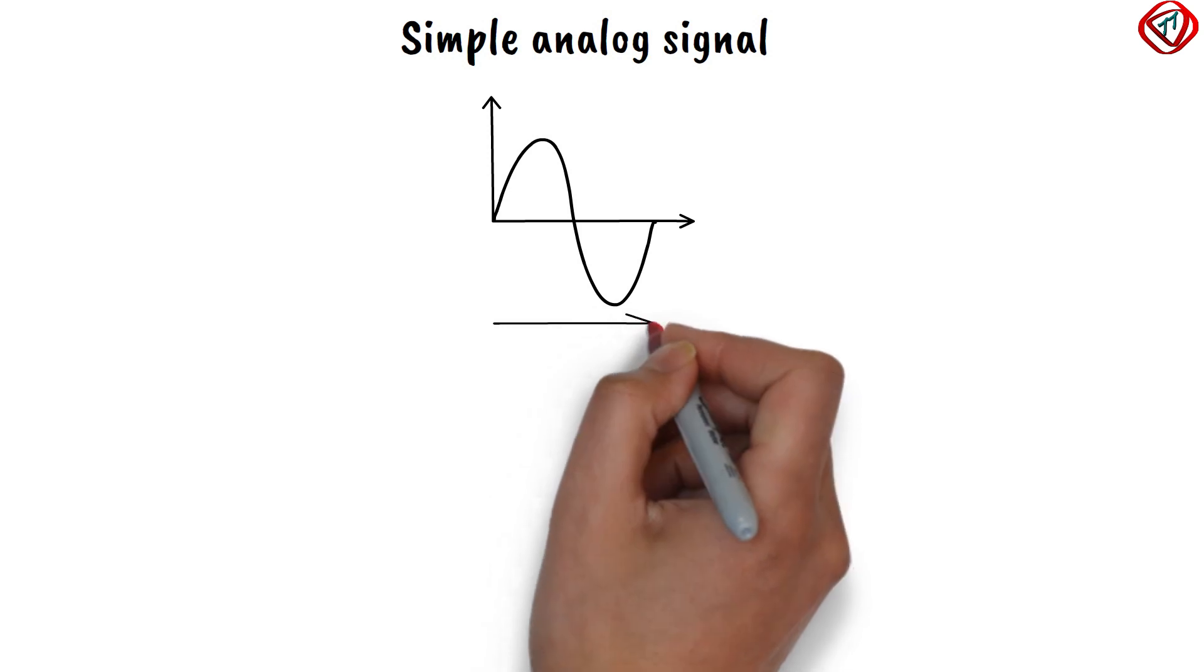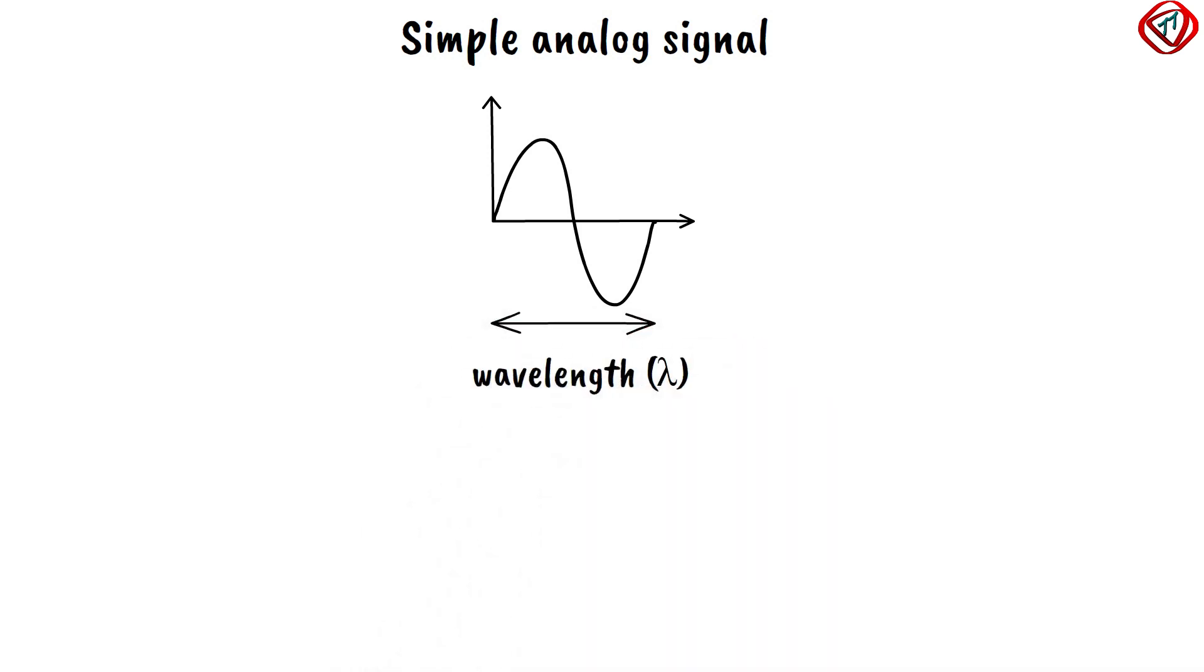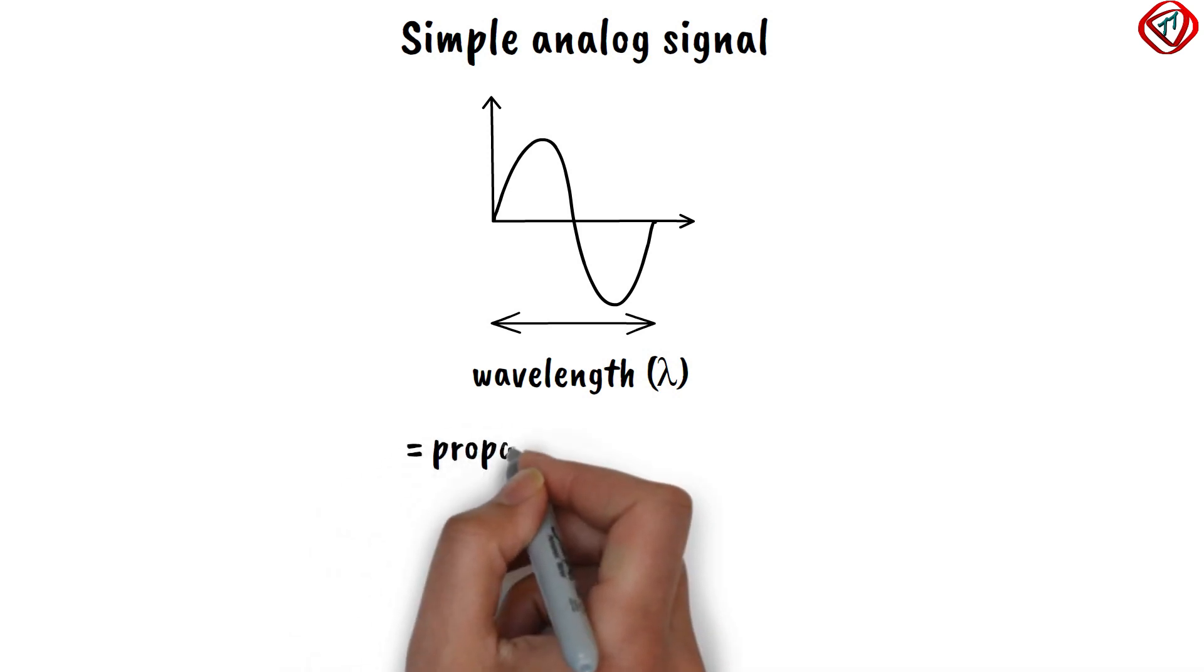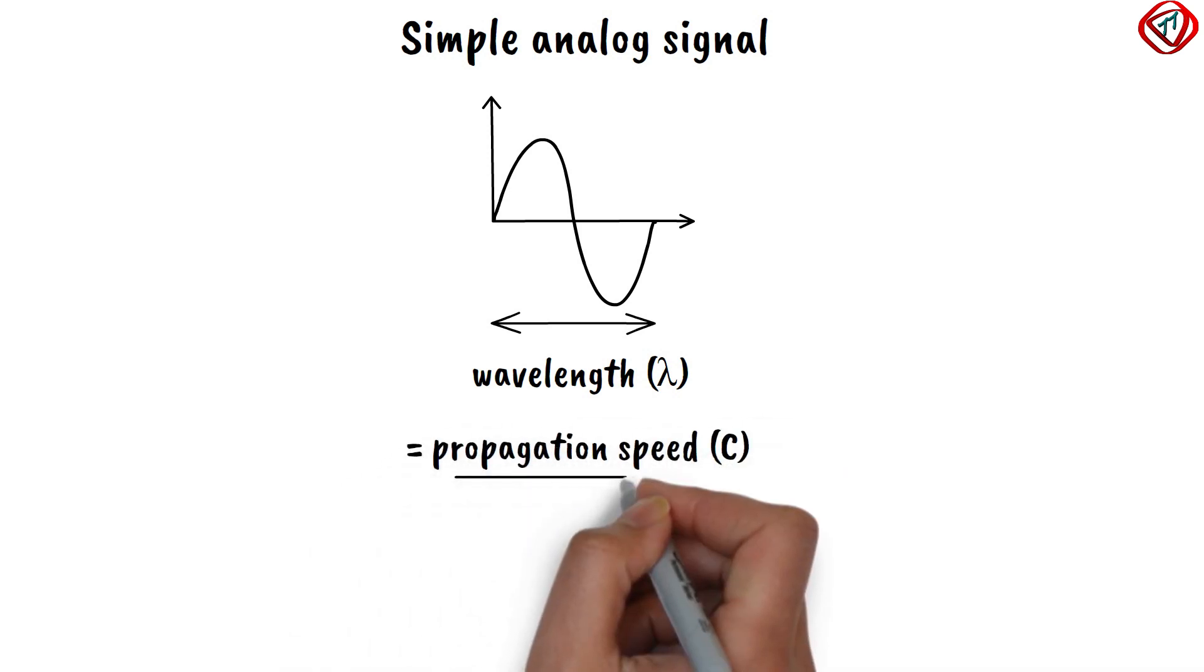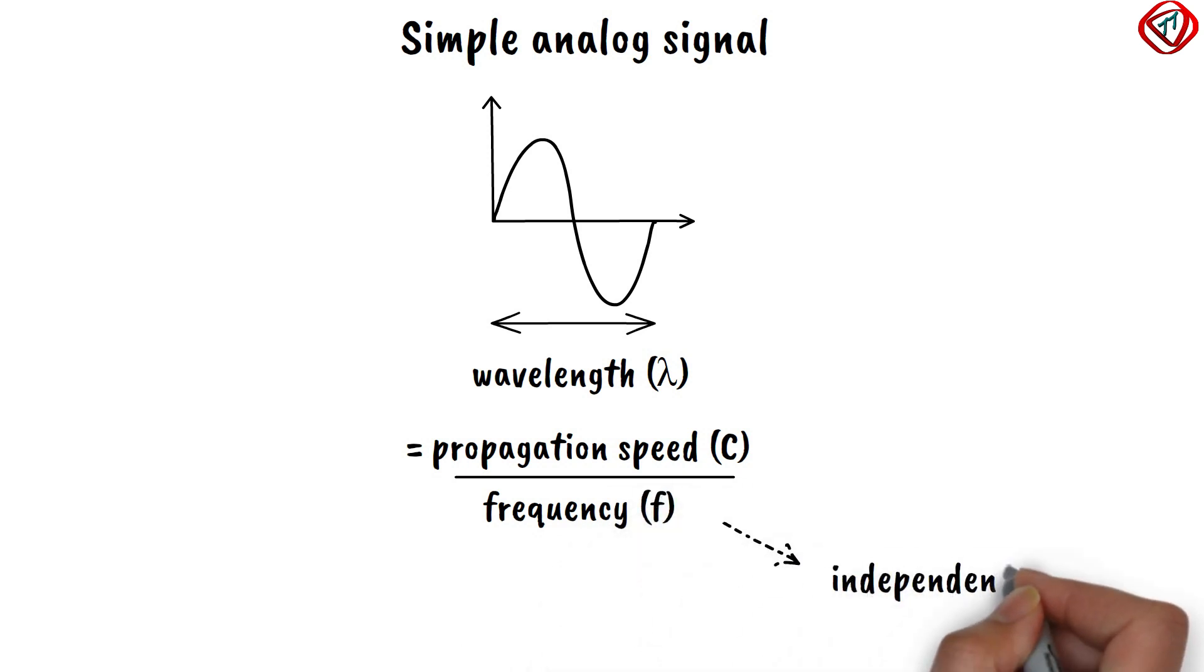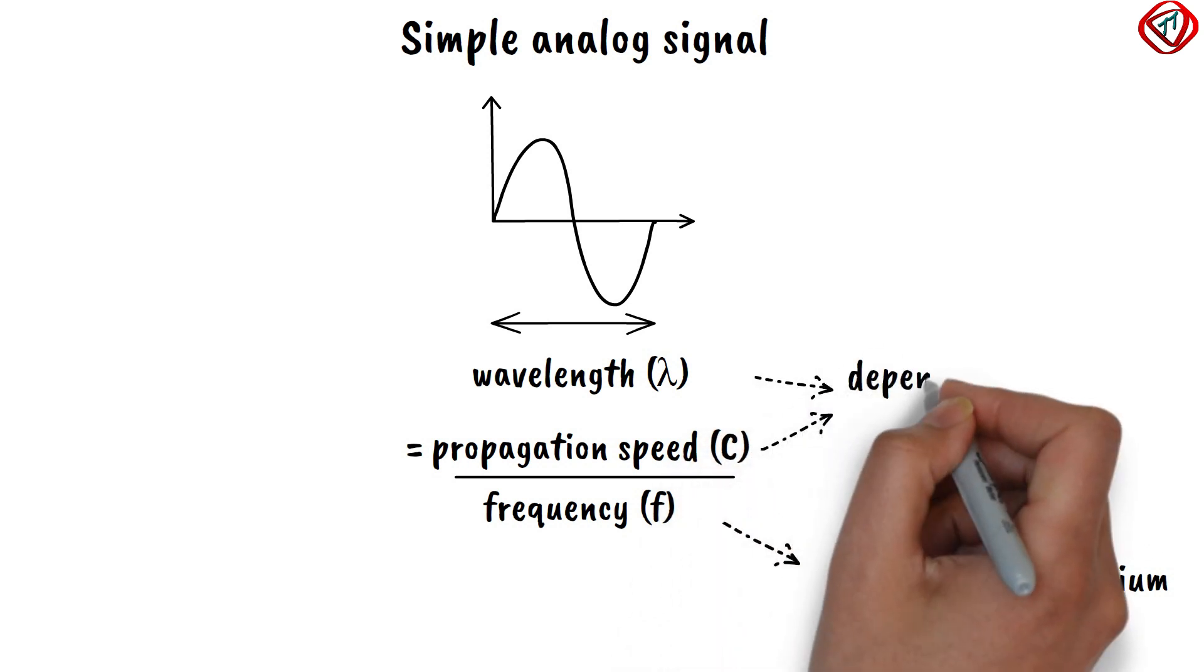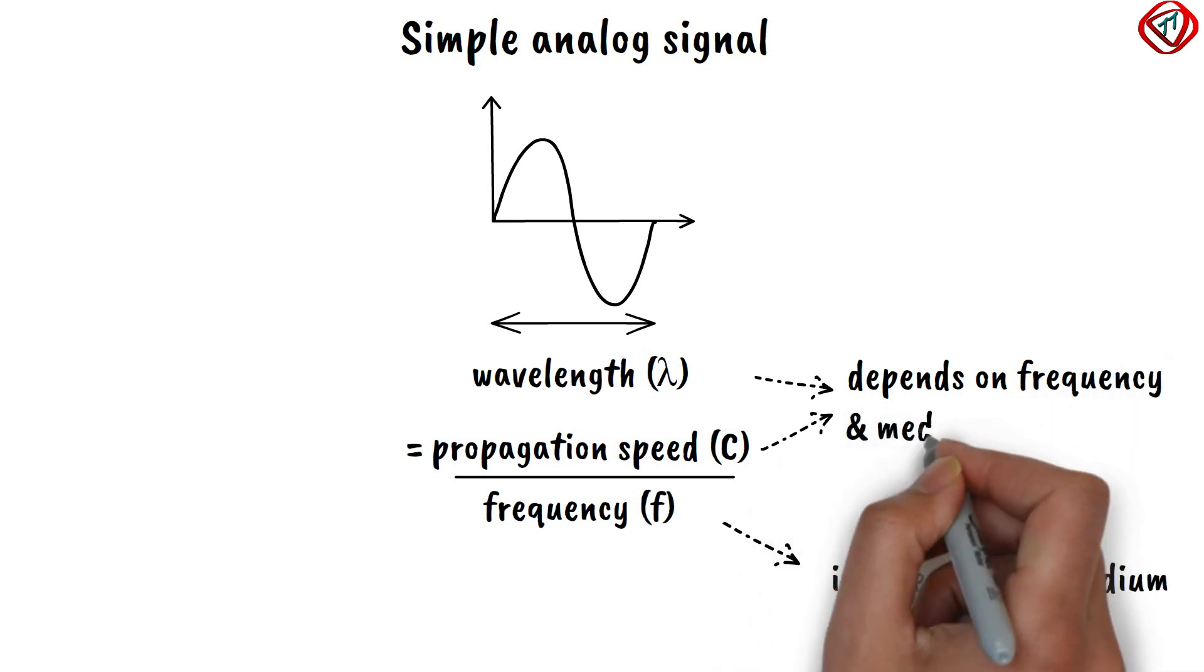The distance covered by a signal in one cycle is called its wavelength. It is calculated as propagation speed divided by the frequency of the signal. The frequency of the signal is independent of the medium. However, the wavelength and the speed of the signal both depend on the frequency and the medium.